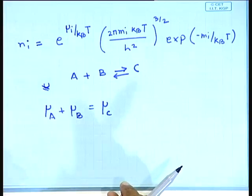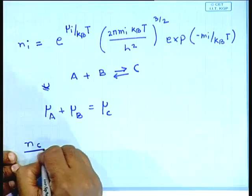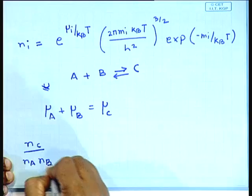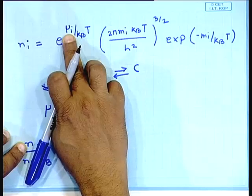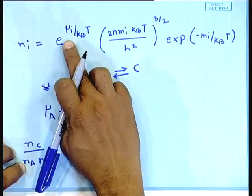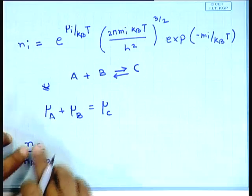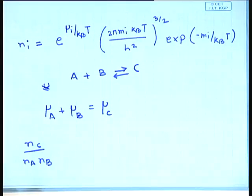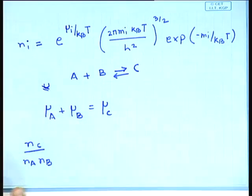One can then take the ratio N_C / (N_A × N_B). N_C has the chemical potential of C in the numerator, N_A has μ_A, N_B has μ_B, and since μ_A + μ_B − μ_C = 0, when you take this ratio the chemical potential term cancels out completely.